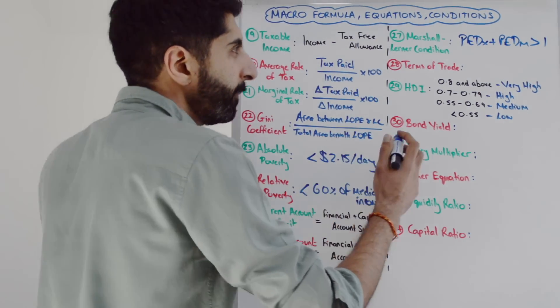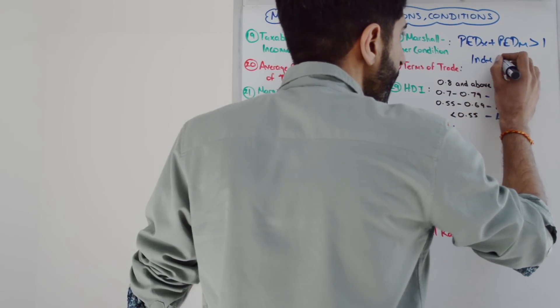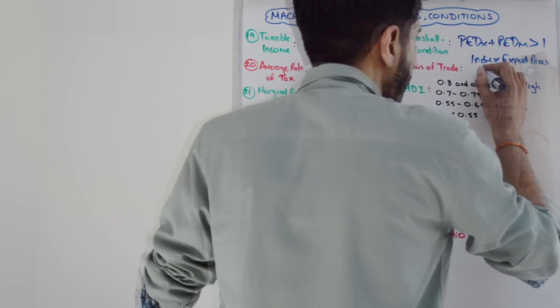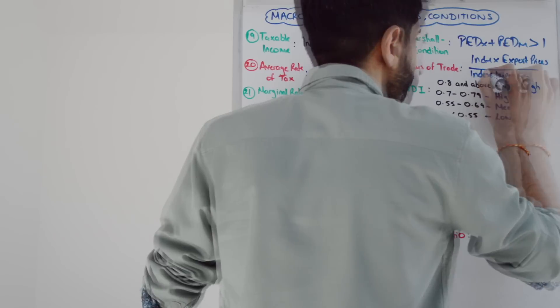The terms of trade equation: you take an index of export prices, divide by an index of import prices, then multiply by 100.